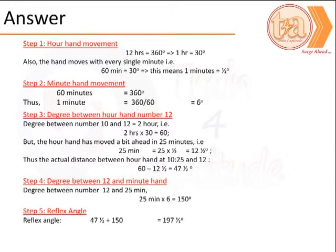Next, we calculate the difference between the hour hand and the numeral 12 position. That is, we have 2 hours between 10 o'clock and 12 o'clock, that is 60 degrees.